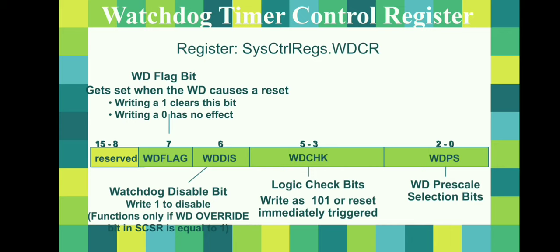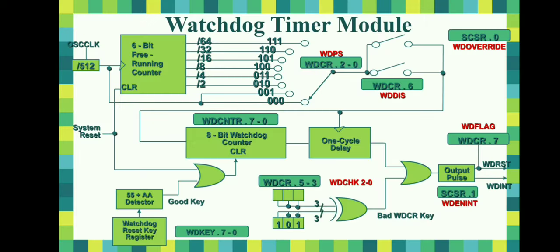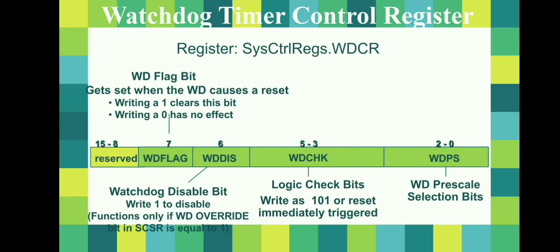In the watchdog timer register, bits 2 to 0 represent the watchdog prescaler (WDPS). The watchdog prescaler can be used to increase the watchdog overflow period by selecting these bits. The logic check bit is another security bit — if you write the combination 101 at this place it will do nothing, but writing any other value will immediately reset the counter. If you want to disable the watchdog timer, you can do so by writing a 1 to the watchdog disable register.